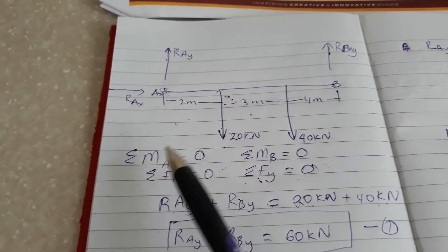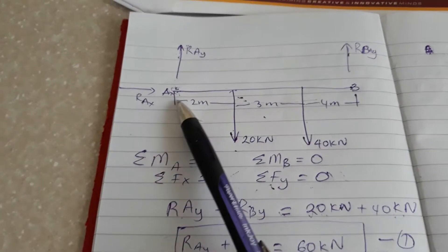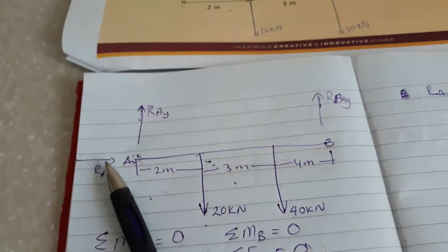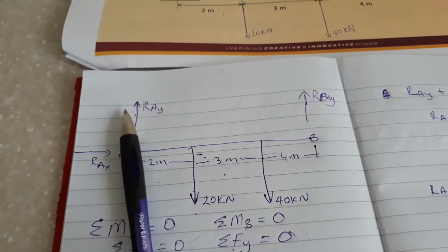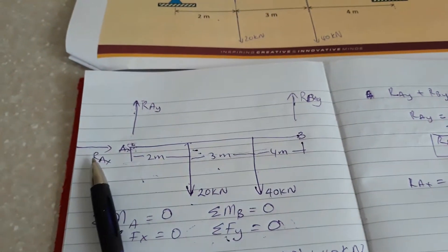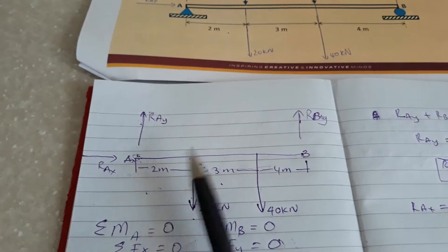Next I'm going to use the sum of moments at point A equals zero. If you look at point A, clockwise moment equals counterclockwise moment.